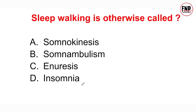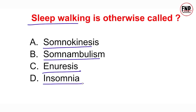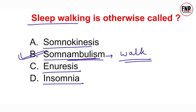Next question: Sleep walking is otherwise called — somnokinesis, somnambulism, enuresis, or insomnia? Correct answer is Option B — somnambulism. 'Ambul' ka matlab hota hai walk aur 'somn' ka matlab hota hai during sleep. Neend mein sote hue chalna somnambulism ke naam se jaana jaata hai. Insomnia ka matlab hota hai neend nahi aana, lack of sleep hona.